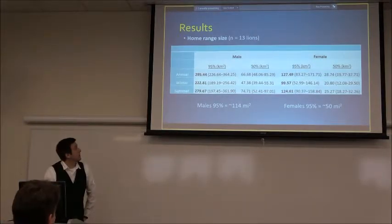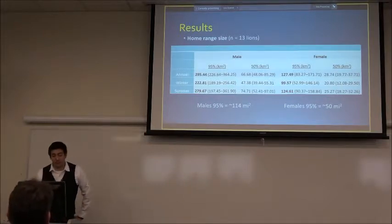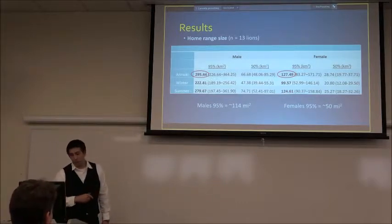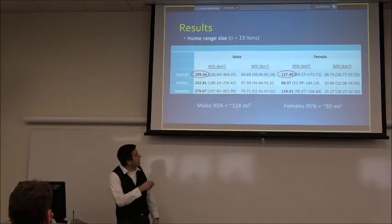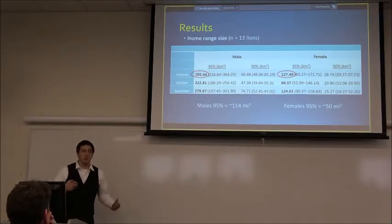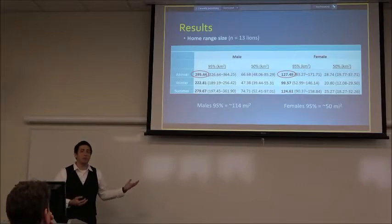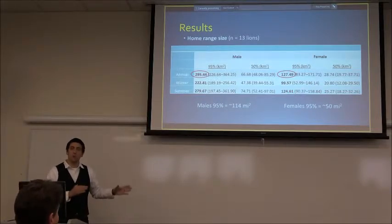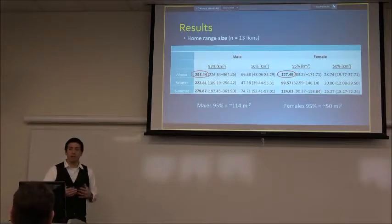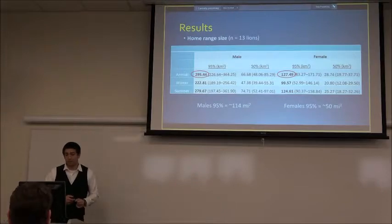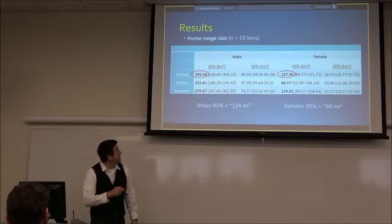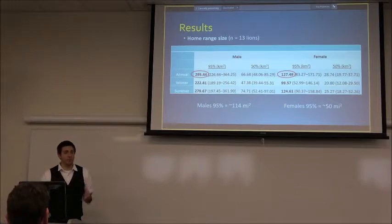Home ranges were calculated from 13 lions. Males averaged nearly 300 square kilometers — about 114 square miles — while females averaged 128 square kilometers, roughly 50 square miles. These estimates fall within the range documented by other studies across the country and are actually on the low end, possibly indicating high habitat quality. Winter home ranges were considerably smaller than summer ranges in both sexes, likely because snow limits movement and prey also moves less.